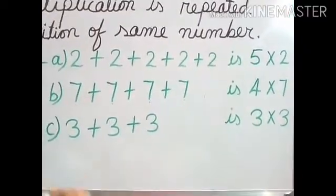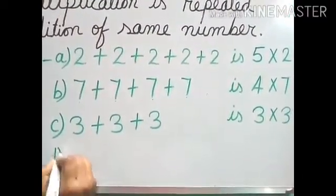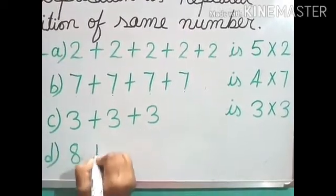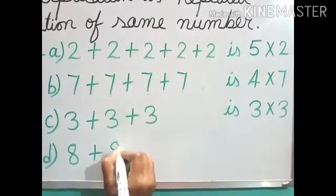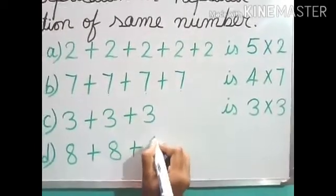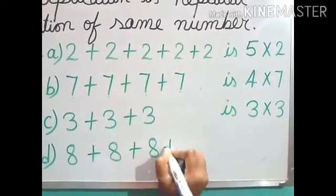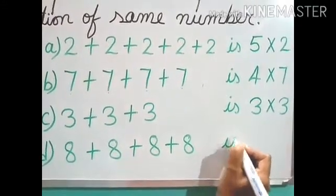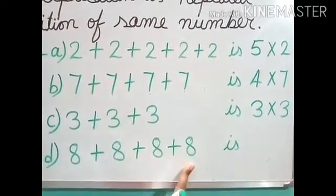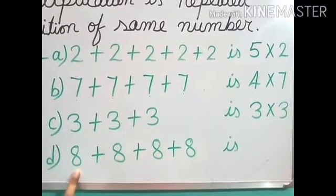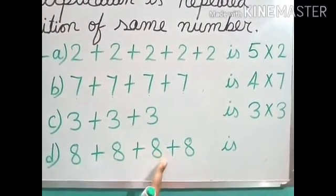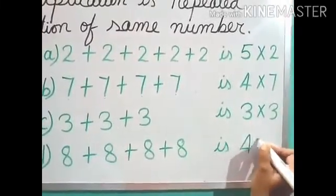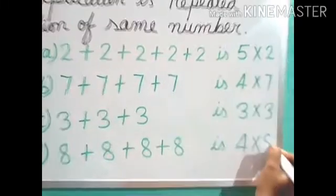Now let us see the last one — number D: 8 plus 8 plus 8 plus 8 plus 8. Can we tell this one? Let us count: 1, 2, 3, 4. So we can write it as 4 multiplied by 8.